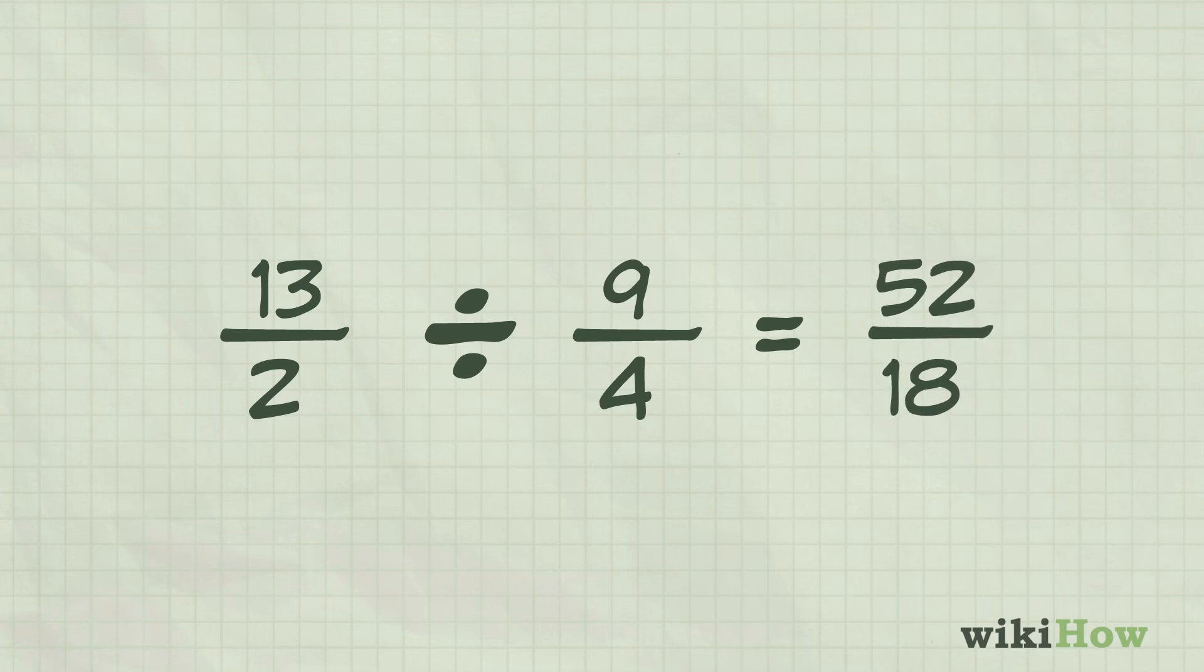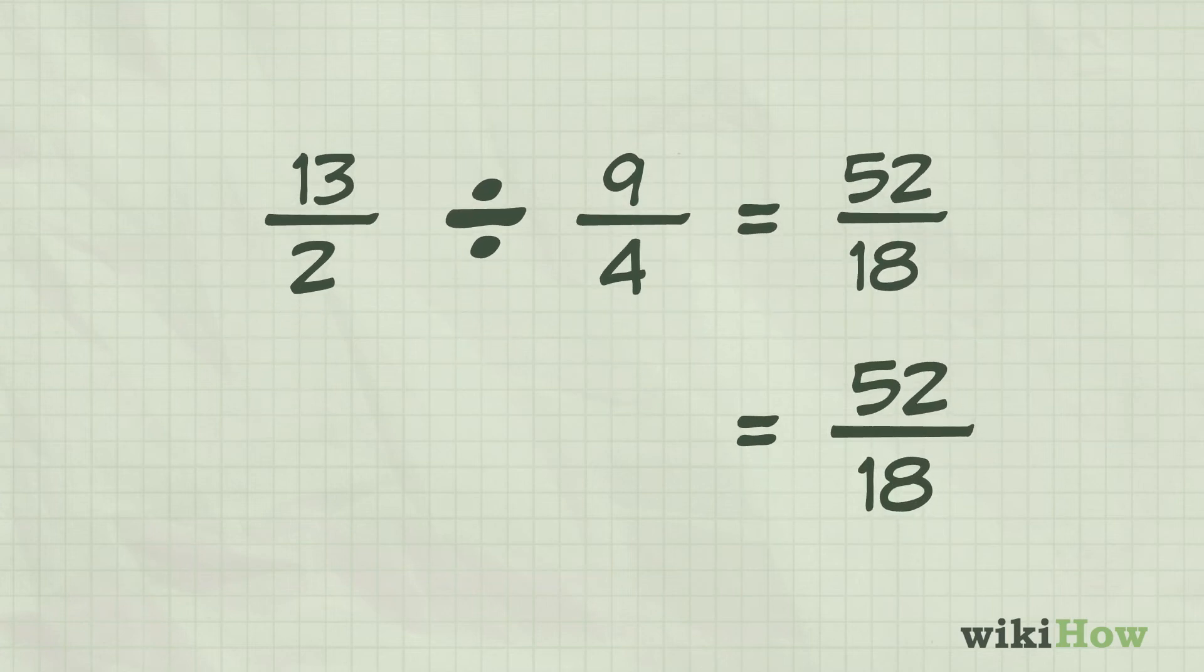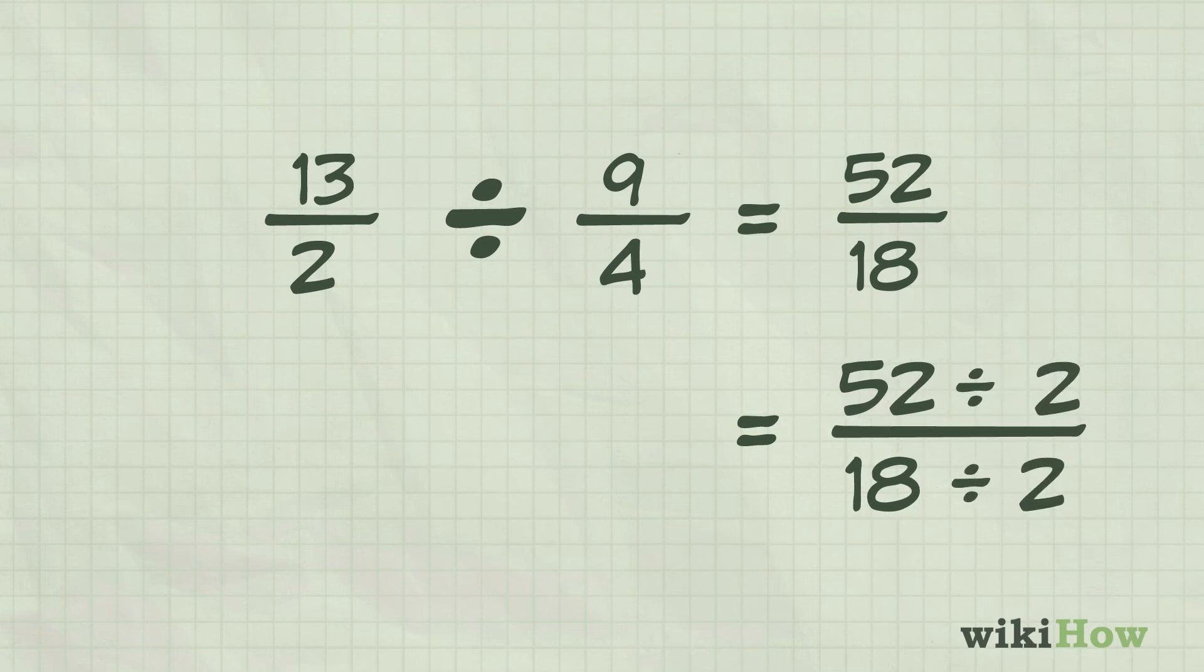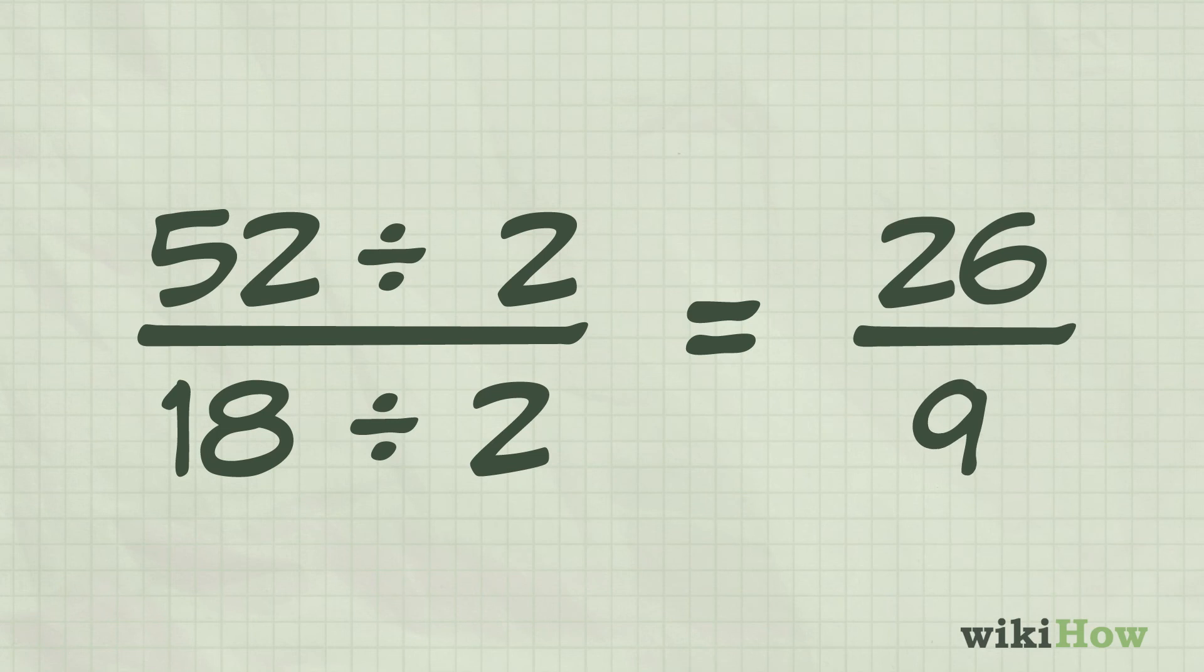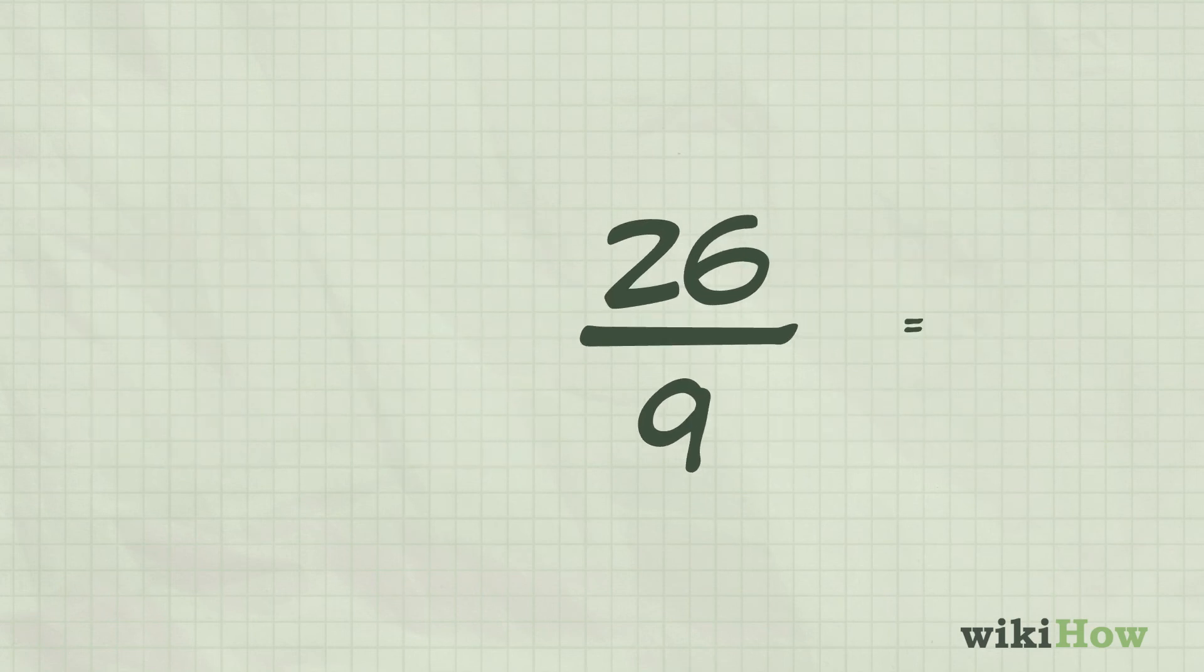If you can, simplify your answer by dividing the numerator and denominator of the fraction by their greatest common factor. 52 and 18 both share the factor 2, so you can simplify the fraction to 26 over 9.